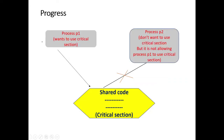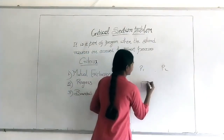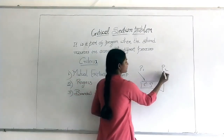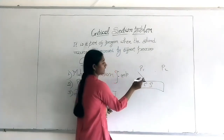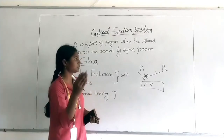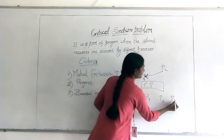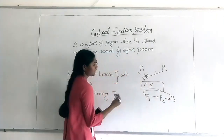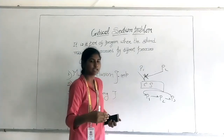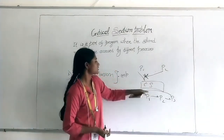The second criterion is progress. If you have two processes P1 and P2, and P1 wants to use the critical section but P2 does not, P2 should not block P1 from entering. In round robin scheduling, P1 uses the critical section, then P2, then P3, and so on. If P2 doesn't want to use the critical section, it should not prevent P1 from going in. Every process that wants to execute should be allowed to proceed. This is called progress.